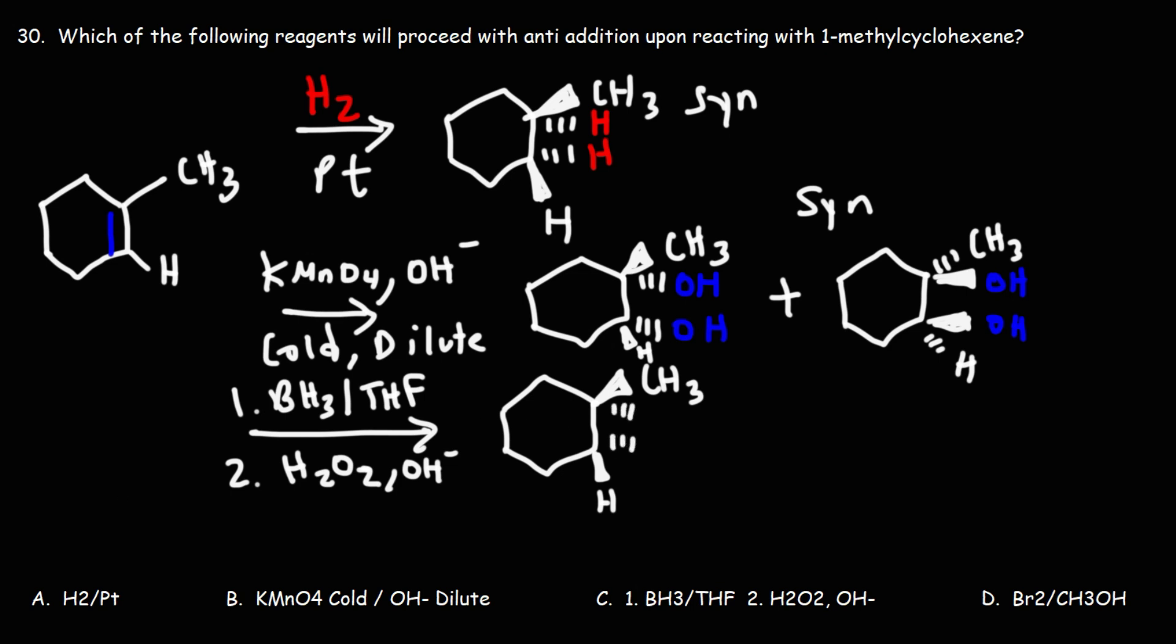Now I'm going to highlight the two groups that are added in red. This reaction proceeds with syn-addition. The OH group is going to go on the less substituted secondary carbon of the double bond. The hydrogen will go on the more substituted carbon of the double bond. That is the tertiary carbon. But it proceeds with syn-addition. Now we're also going to get the enantiomer as well. So that's the end result of the hydroboration oxidation reaction. It's a syn-addition reaction. So we can eliminate answer choices A, B, and C.